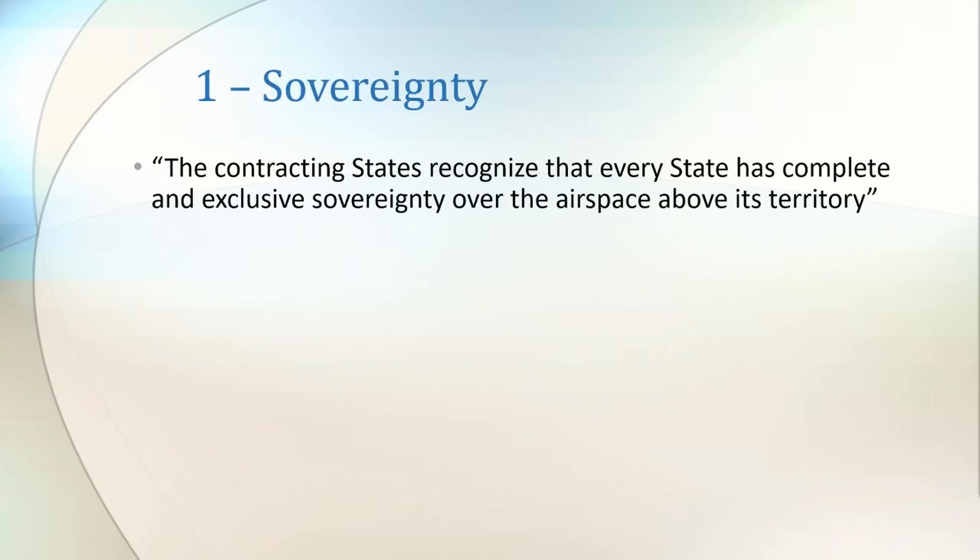Article 1 states that the contracting states recognise that every state has complete and exclusive sovereignty over the airspace above its territory. This means that the airspace over a state ultimately belongs to that state. This ensures that ICAO is complying with the previously established Paris Convention of 1919.